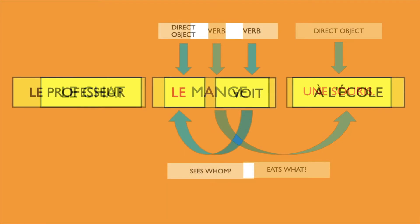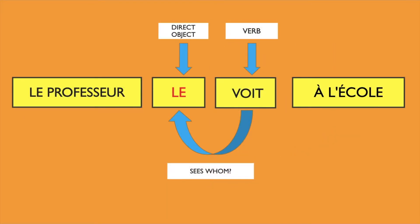In this case, 'le professeur le voit à l'école' — the teacher sees him at school. Sees whom? 'Le,' him, her, or it, will stand as the direct object. You will notice that it comes before the verb, and we're going to explain that a little bit later.